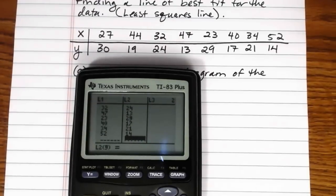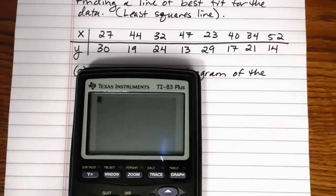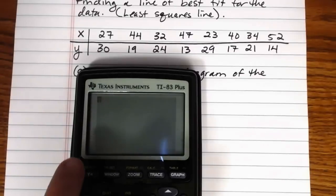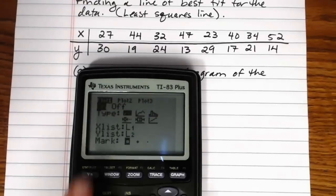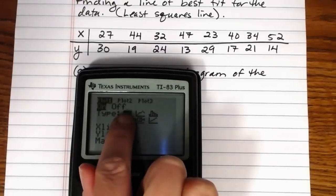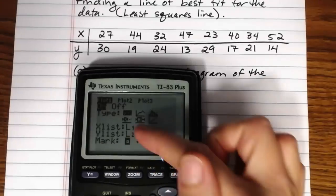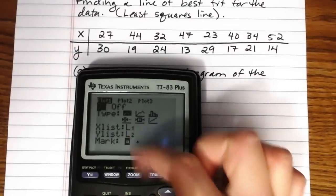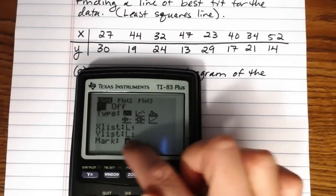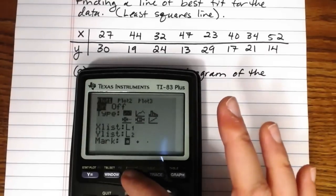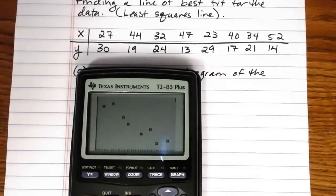Okay so we've got our data in there into two lists and again remember to create the scatter plot here or the scatter diagram we go to second y equals, select a plot by pressing enter, make sure it's turned on, make sure your scatter plot is selected L1 and L2 if that's where your data are stored, pick a mark to use, I'm just going to use a little square there, and do zoom nine to let the calculator zoom in on it.